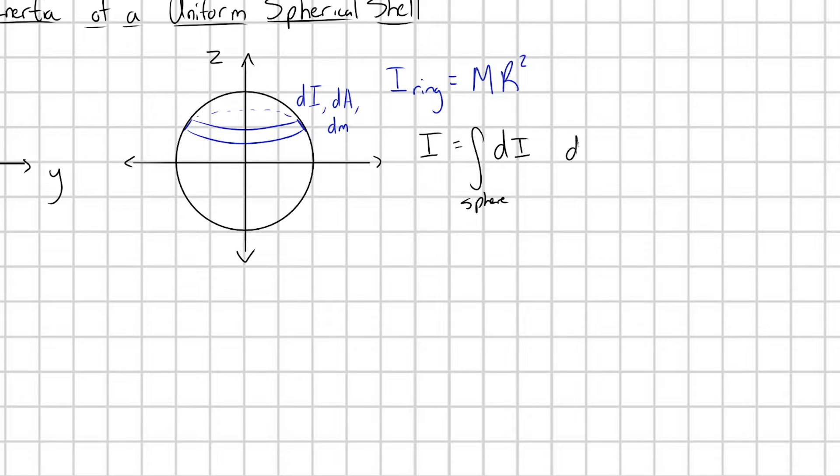And what is each of these little dI's going to be? Well, we recognize that we just have to use this equation. I'm going to point out that each of these rings is going to have some radius. I'll call that little r. And if we define things like this, then dI is going to be little r squared dm. Awesome.